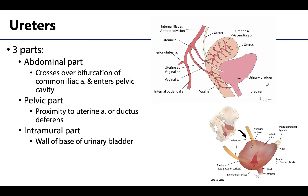Let's start with the ureters, as I hope these structures are already quite familiar to you, as we did discuss them in some detail during the renal section. The ureters are two muscular tubes that allow the transport of urine from the kidneys — continuous with the renal pelvis — to the urinary bladder. They are approximately 25 to 30 centimeters in length and have three major parts. We have already explored the first part, the abdominal part, which descends anterior to the psoas major muscle and transitions to the pelvic part after crossing the bifurcation of the common iliac arteries to enter the pelvic cavity.